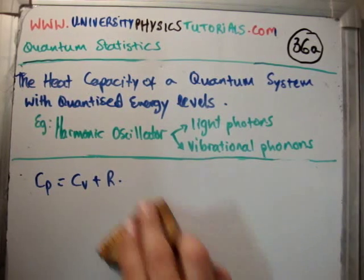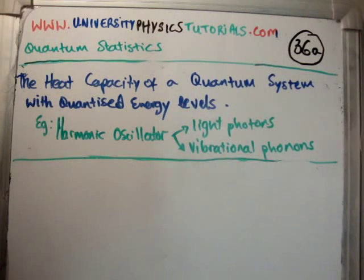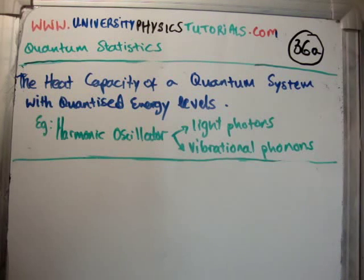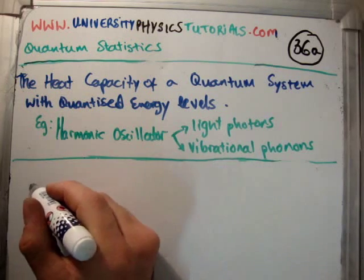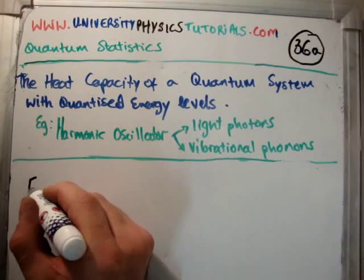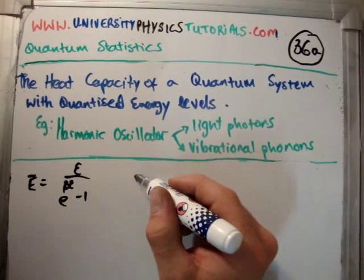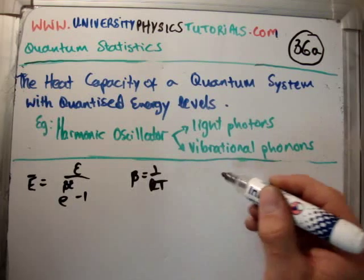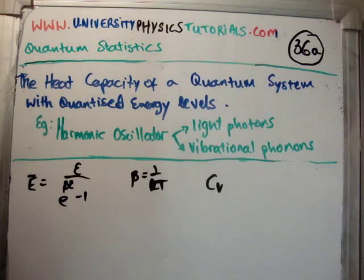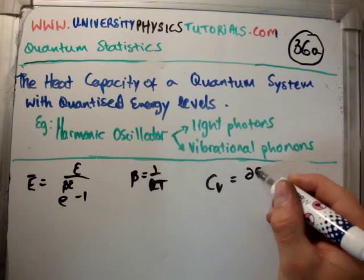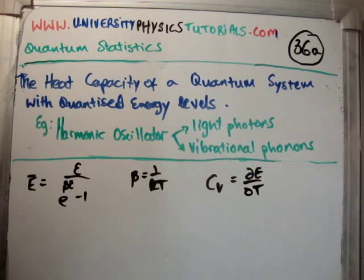So next what we're going to do is we're going to begin. Just to write the formula that we had a moment ago. We had the average energy for a single harmonic oscillator was epsilon over e to the beta epsilon minus 1. Beta of course is equal to 1 over kT. Now I'm going to tell you that the heat capacity at constant volume is equal to the temperature derivative of the energy, so it's del E del T. You can do a couple of videos on thermodynamics if you're not satisfied with that, but I'm sure you've seen that at least once in your studies of physics before.